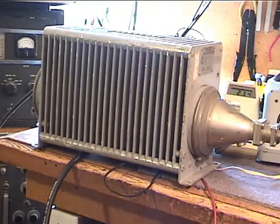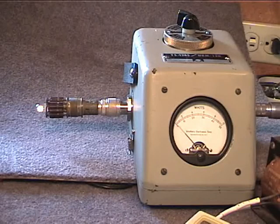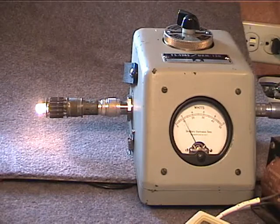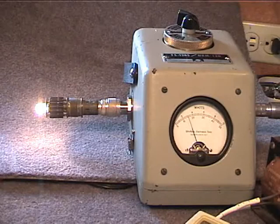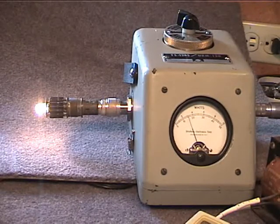But just for fun, instead of the dummy load, let's put a light bulb on. This is kind of traditional. This is a small light bulb on a little 50 ohm dummy load. We'll be careful not to burn it out, so we won't go quite up to full power here.